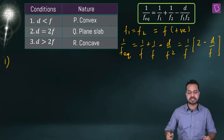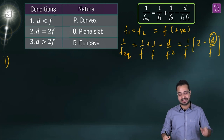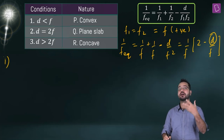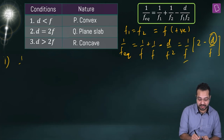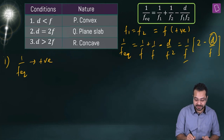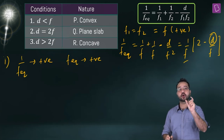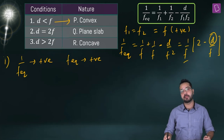First situation: d is less than f. If d < f, then d/f < 1, which means 2 - d/f gives a positive number. Since f is already positive, 1/f_eq comes out positive, which means f_eq is also positive — so this combination acts as a convex lens.